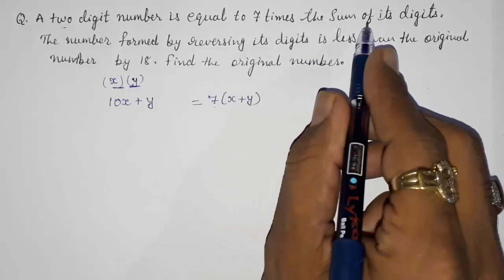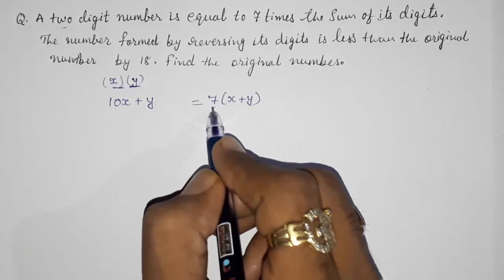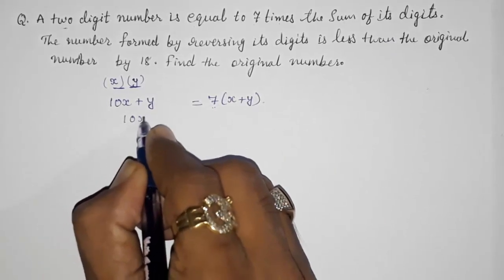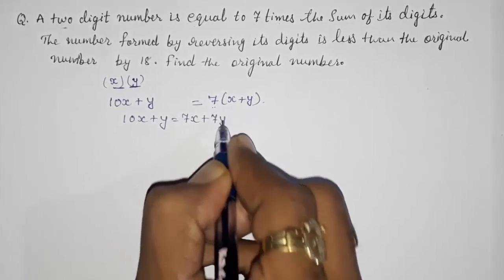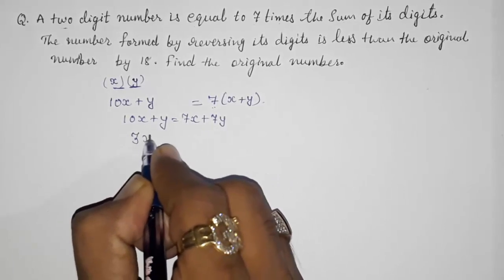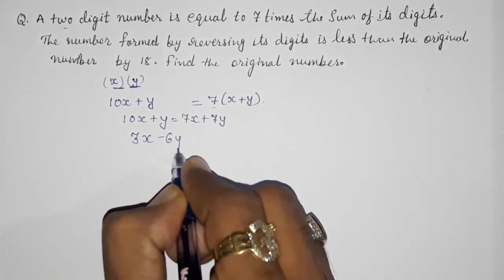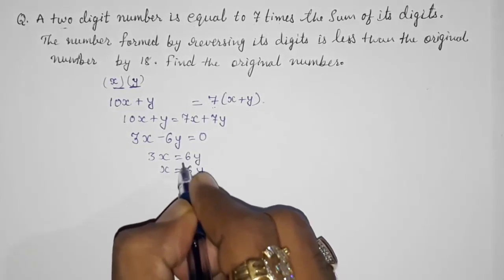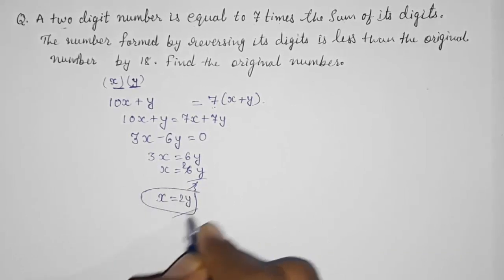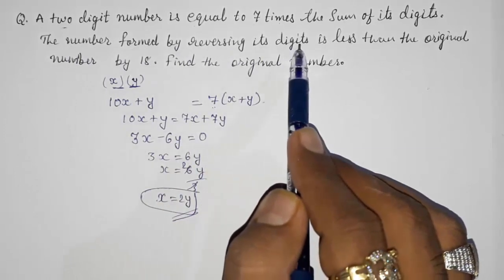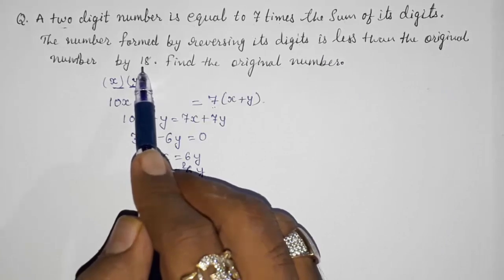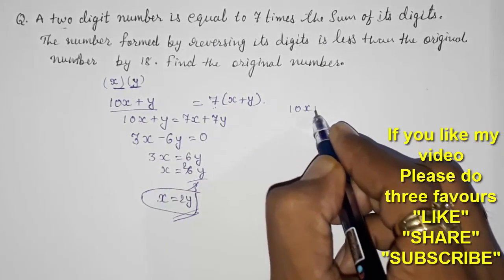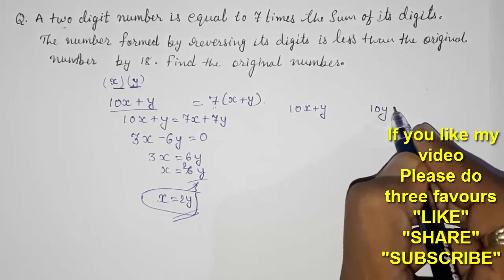Simplifying 3x equals 6y gives x equals 2y. This is our first equation. The original number is 10x plus y. The reversed number is 10y plus x. They said the reversed number is 18 less than the original, so: 10x plus y minus (10y plus x) equals 18.